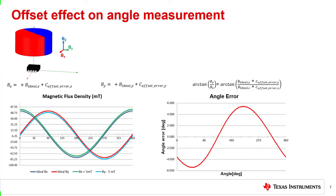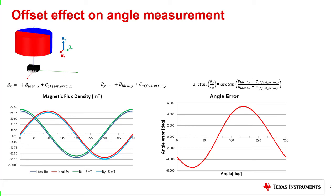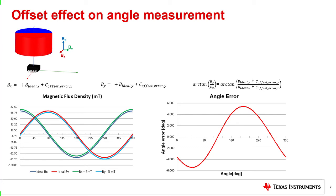Offset also affects angle measurements, as shown in the graphs below. For the graphs, there is an offset error that results in Bx being 5 mT above the actual value, and an additional offset error that results in By being 5 mT below the actual value. The graph on the bottom right shows how this offset affects the angle error across the angle measurement range. The lower the offset on the x and y-axis of the 3D Hall sensor, the less offset affects the angle measurements. Similar to gain error, offset error can be cancelled by determining a calibration constant to add to readings; however, if you have a Hall sensor with good offset specs, this extra step may not be needed.